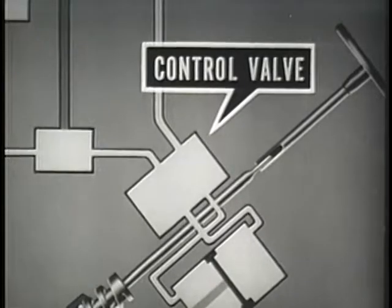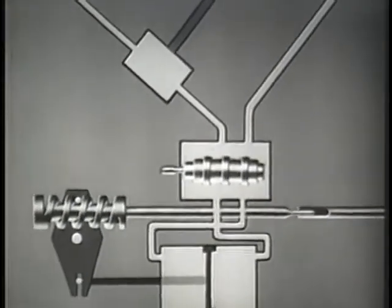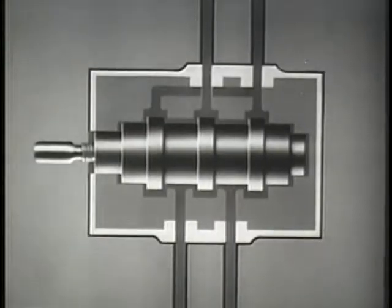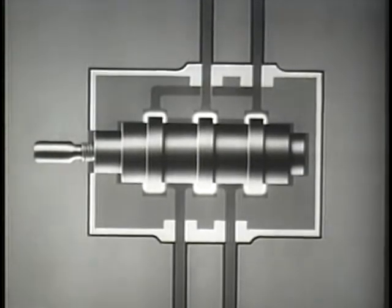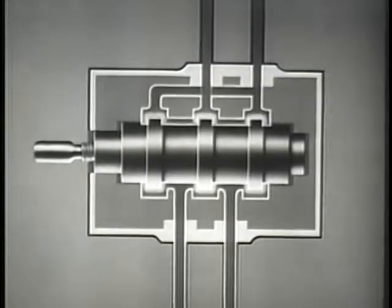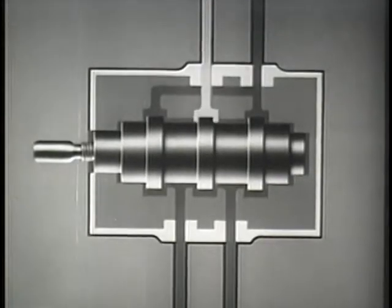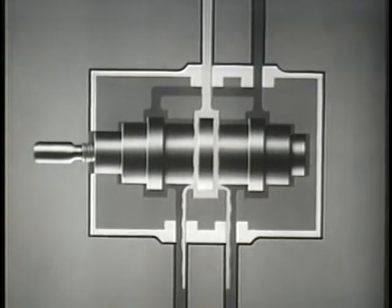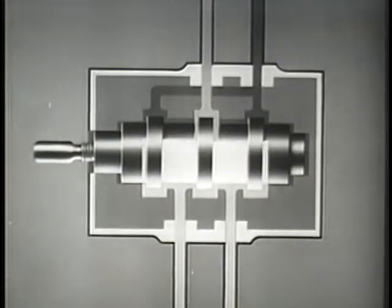The control valve is the heart of the hydraulic steering system. The control valve has a spool which directs and controls the flow of fluid to the power cylinder. The fluid enters the control valve through the inlet port and flows around the spool in channels leading to the power cylinder. After the cylinder has been filled, all fluid then flows to the reservoir.